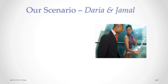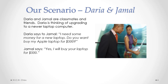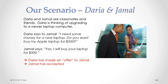To help us understand the rules of offer and acceptance, we will use a scenario called Daria and Jamal. In this scenario, Daria and Jamal are classmates and friends. Daria is thinking of upgrading to a new laptop. One day Daria says to Jamal, 'I need some money for a new laptop. Do you want to buy my Apple laptop for $500?' Jamal says, 'I will buy your laptop for $500.' So Daria has made an offer to Jamal, Jamal has accepted that offer, and therefore there is an agreement between them.